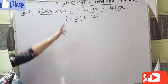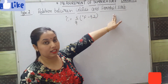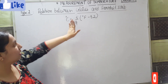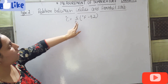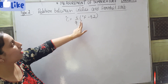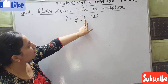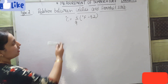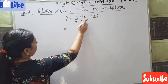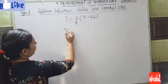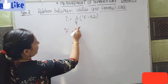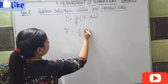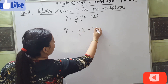Now let's look at the relation between Celsius scale and Fahrenheit scale. The relation is: degree Celsius equals 5 by 9 multiplied by bracket Fahrenheit minus 32. Or if you want to find Fahrenheit from Celsius: degree Fahrenheit equals 9 by 5 into degree Celsius plus 32.